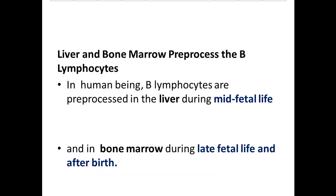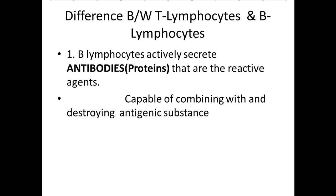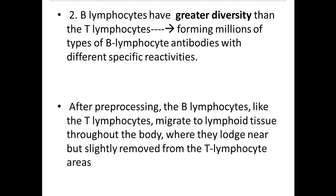Liver and bone marrow pre-process B-lymphocytes: in humans, B-lymphocytes are pre-processed in the liver during mid-fetal life, and in bone marrow during late fetal life and after birth. B-lymphocytes actively secrete antibodies that combine with and destroy antigenic substances, and have greater diversity than T-lymphocytes, forming millions of types with different specific reactivities. After pre-processing, B-lymphocytes migrate to lymphoid tissue throughout the body, lodging near but slightly removed from the T-lymphocyte areas.